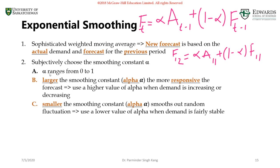The value of alpha can be anything between 0 and 1. A larger smoothing constant — as we approach 1 — means we give higher weight to the actual demand. With values like 0.7, 0.8, or 0.9, we are more responsive to the actual demand. Whenever there is a lot of random variation in the time series, you want to use a higher value of alpha so that you can be more responsive to the actual demand.